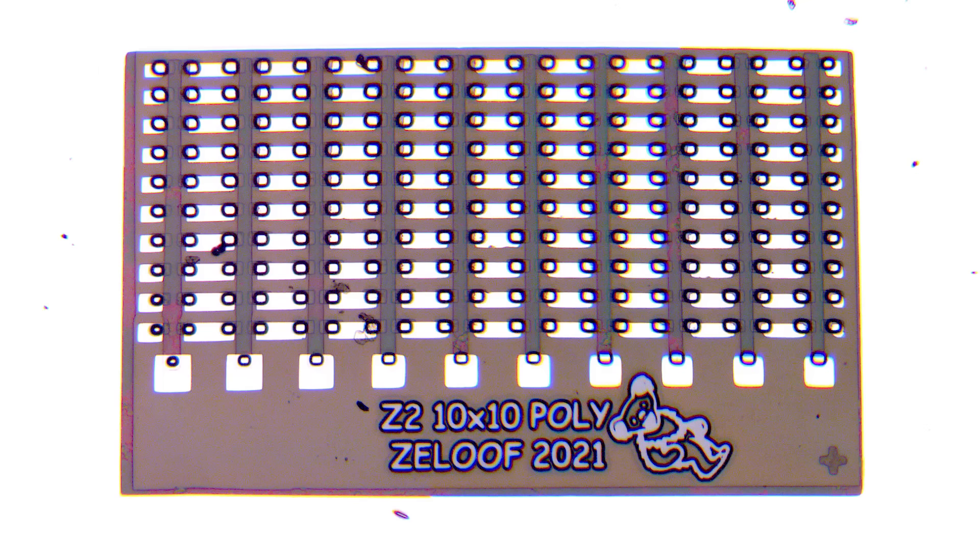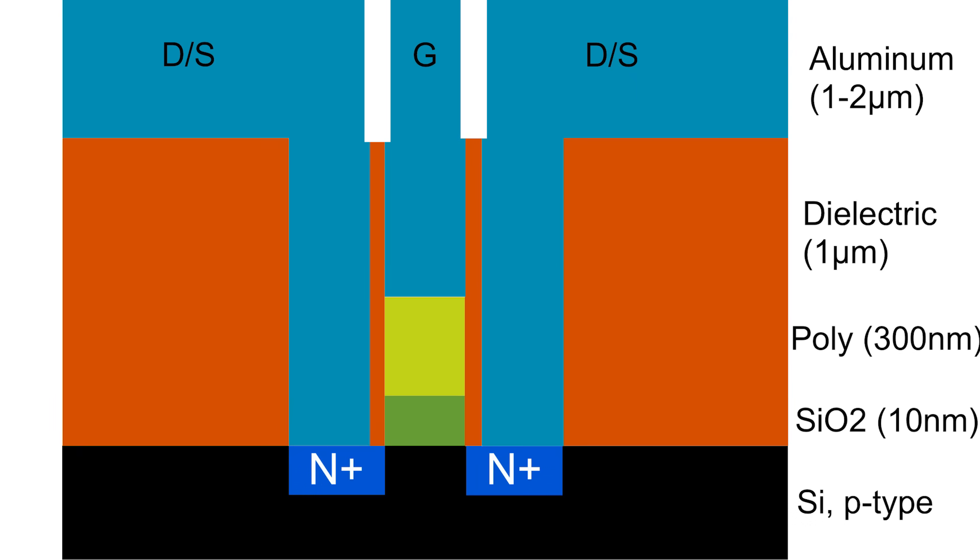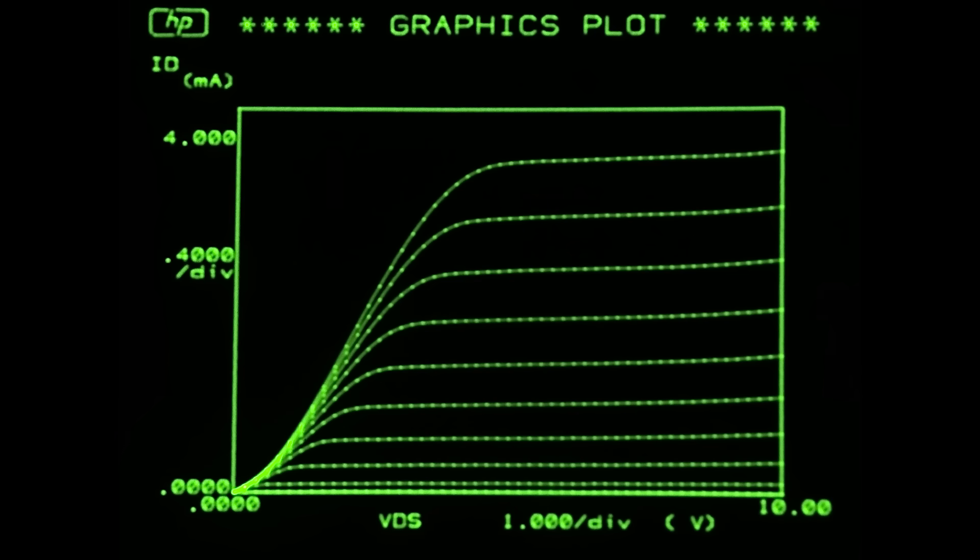This new chip is made on a polysilicon gate process. All these details are on the write-up on my blog, but the effect of that is they work well at very low voltages. They have a threshold voltage of only about 1 volt,